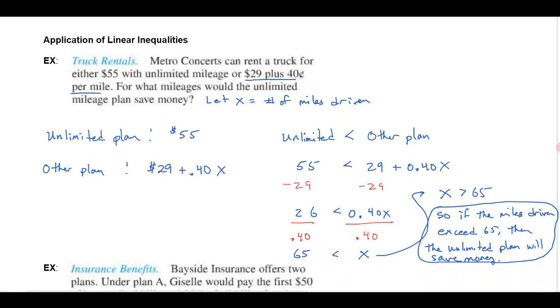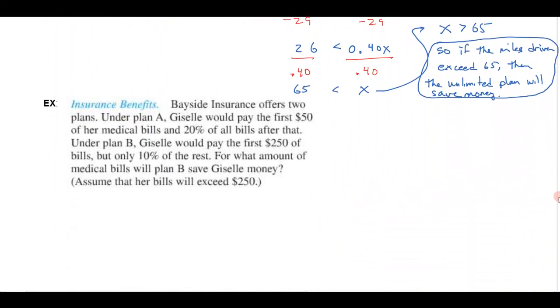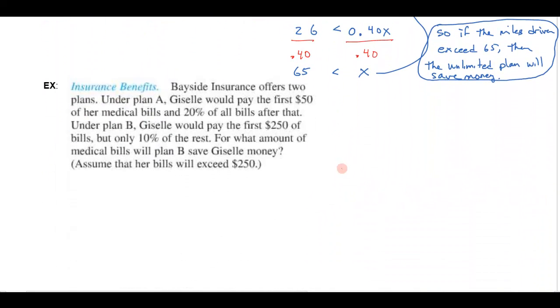Let's go on to one more problem here. This problem is about some insurance benefits. It says that Bayside Insurance offers two plans. Under plan A, Giselle would pay the first $50 of her medical bills and then 20% of all the bills after that. And then there's another plan in which Giselle would have to pay more up front, $250 of her bills, but then only 10% of the rest. The question is for what amount of medical bills will plan B save Giselle money?